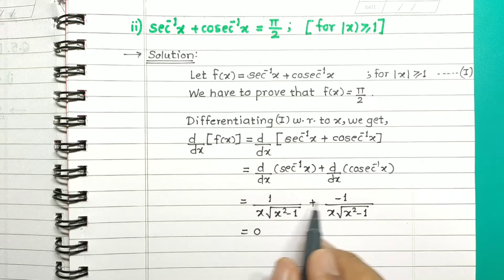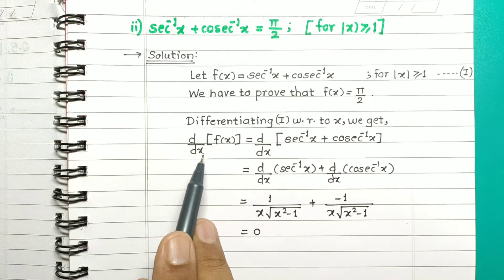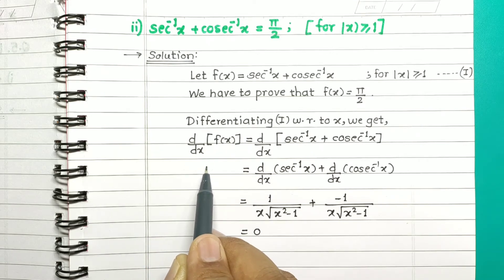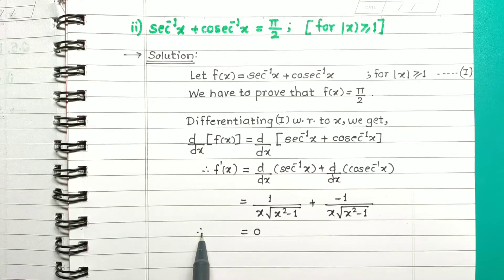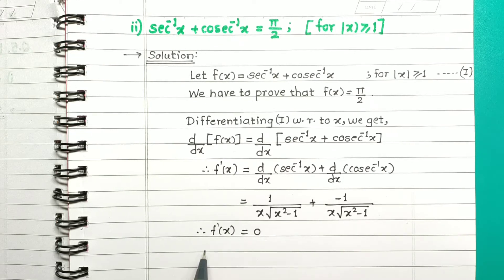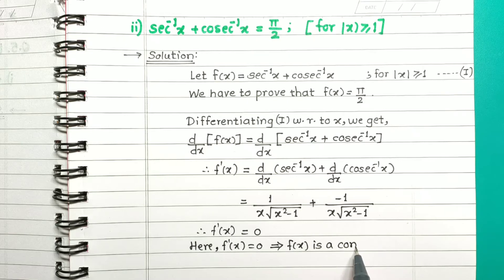The plus and minus terms cancel, so this calculation is 0. On the LHS, derivative of f of x is f dash of x, so we get f dash of x is equal to 0. Since f dash of x is equal to 0, this implies f of x is a constant function.